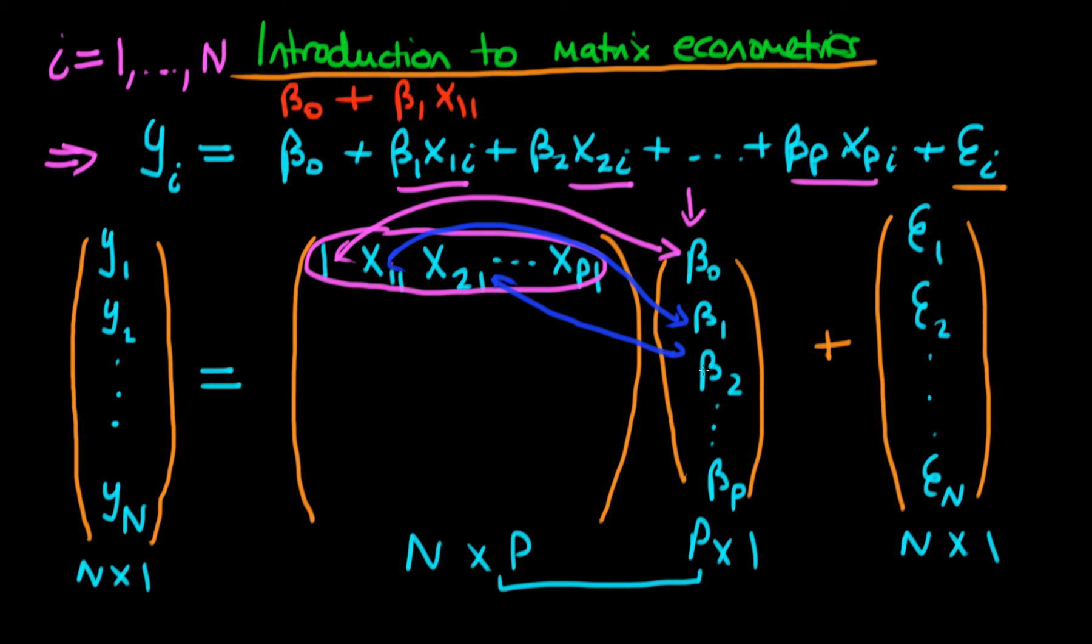continuing up to βpxp1. Adding the error term for this first row, we get ε1. So writing out the first row in full, y1 equals this linear combination of the independent variables plus ε1. We've recovered exactly what we had in the original equation, but just for the first row.